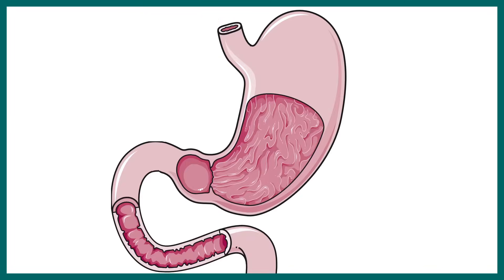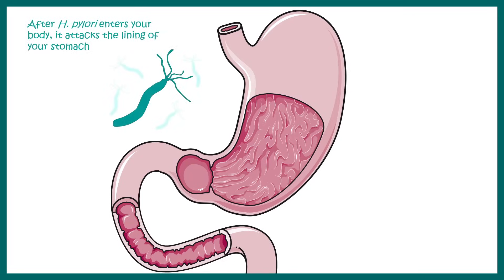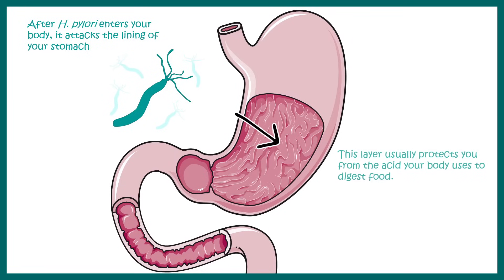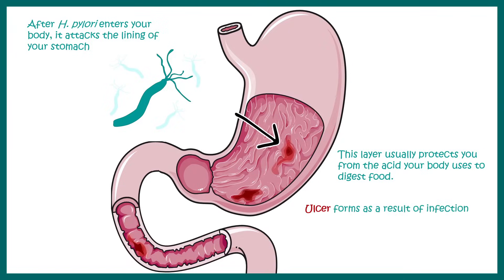Once Helicobacter pylori enters our body, it survives the harsh environment in the stomach and erodes the lining of the stomach, ultimately leading to the formation of a gastric ulcer or a duodenal ulcer.